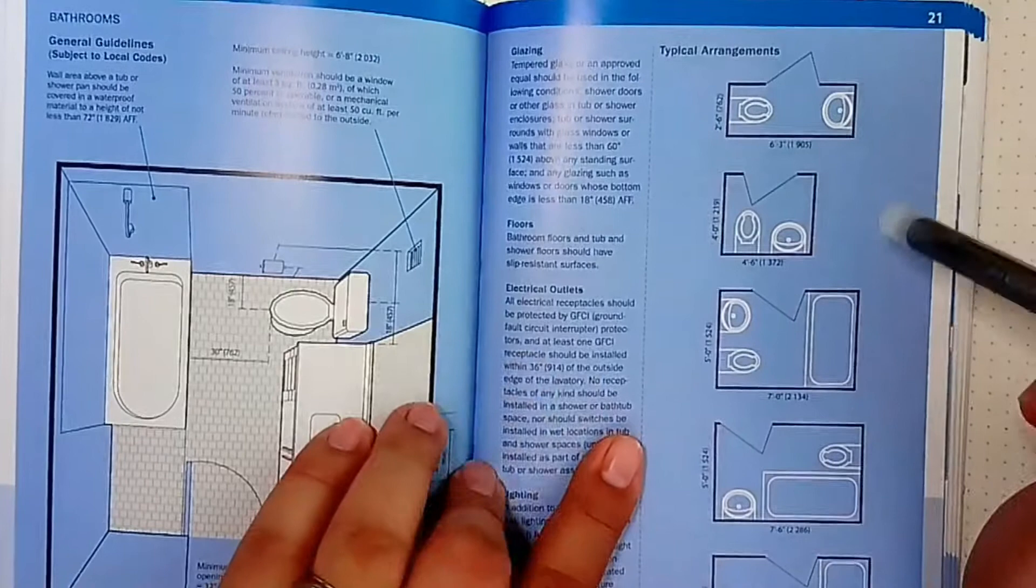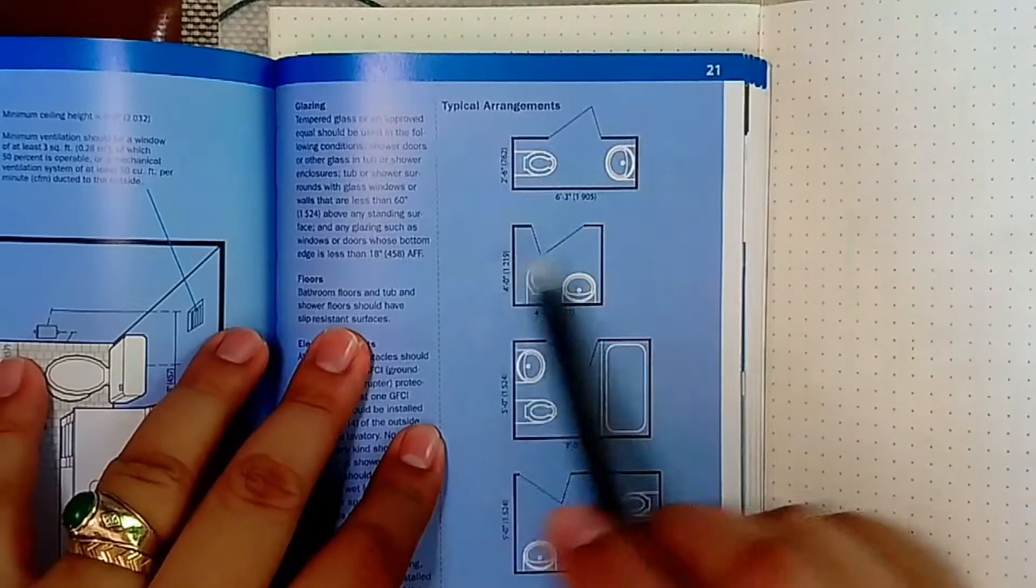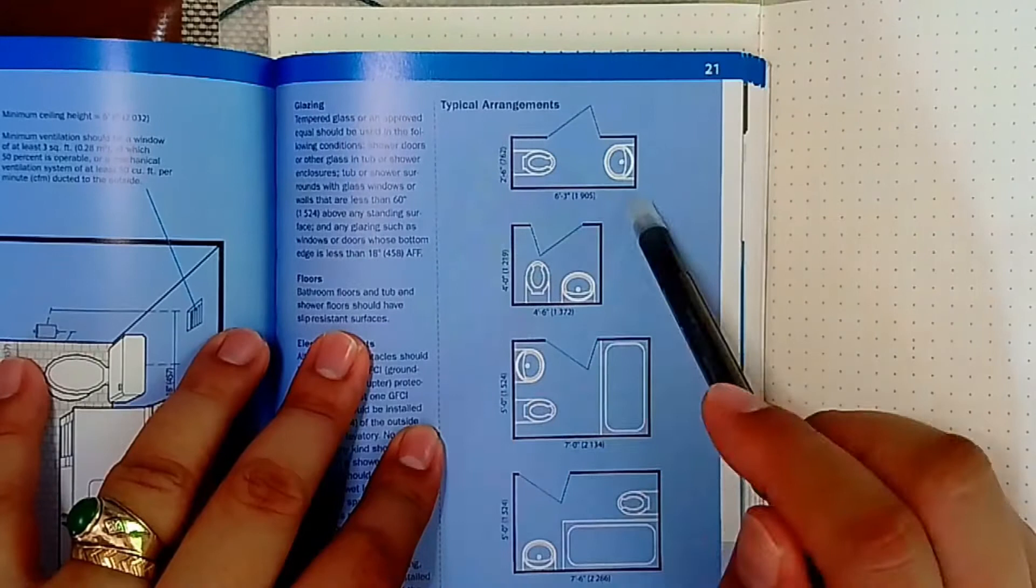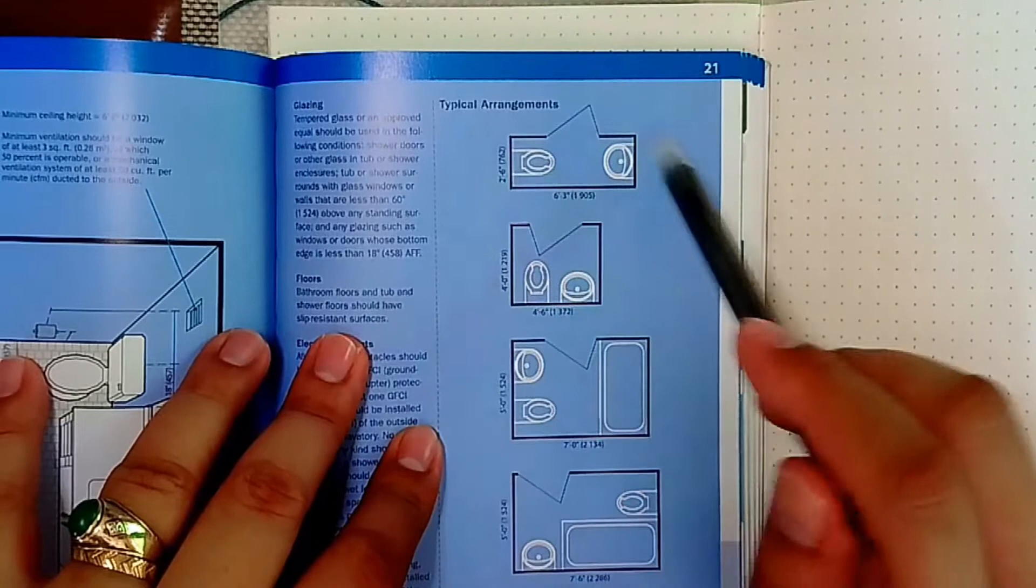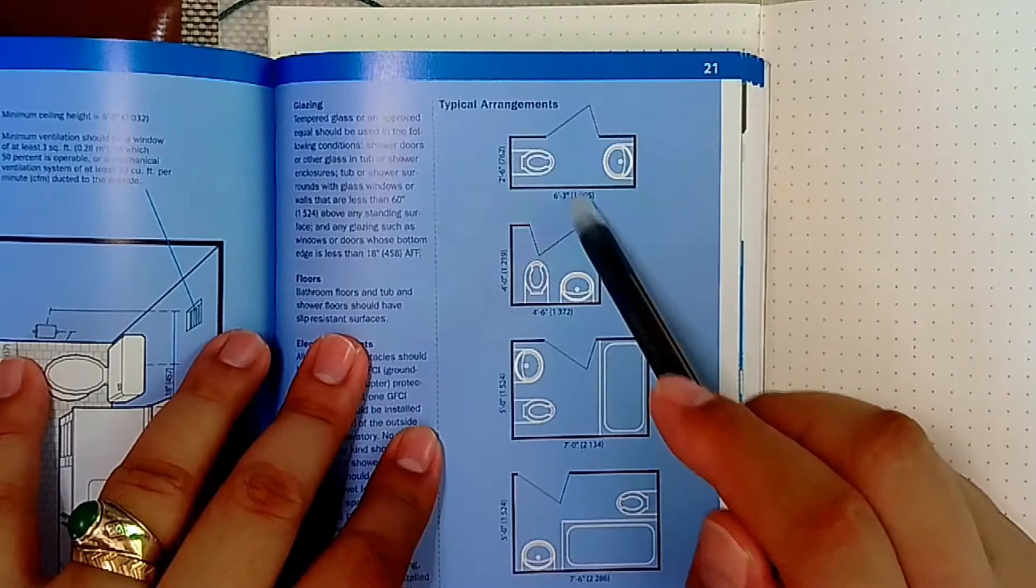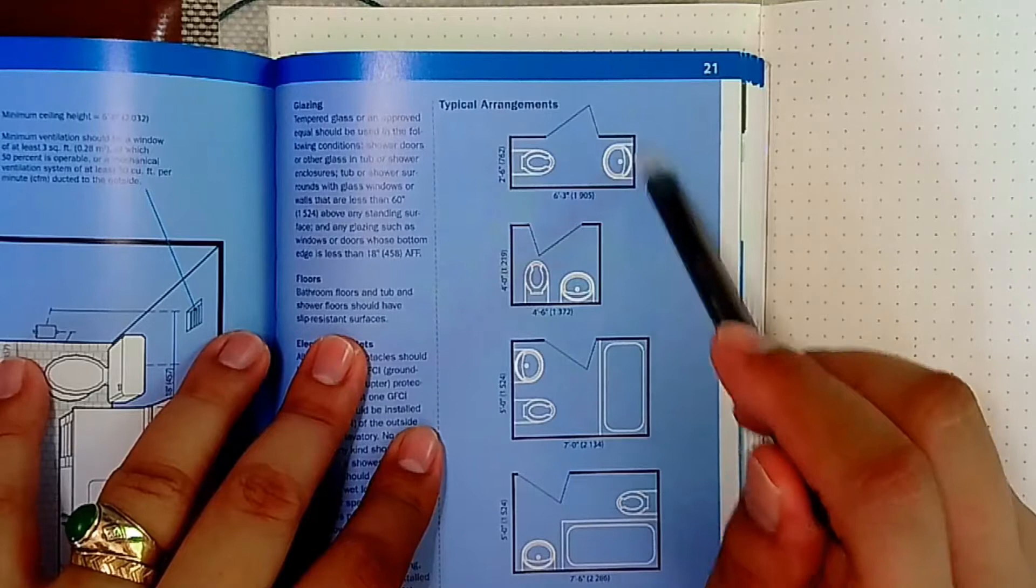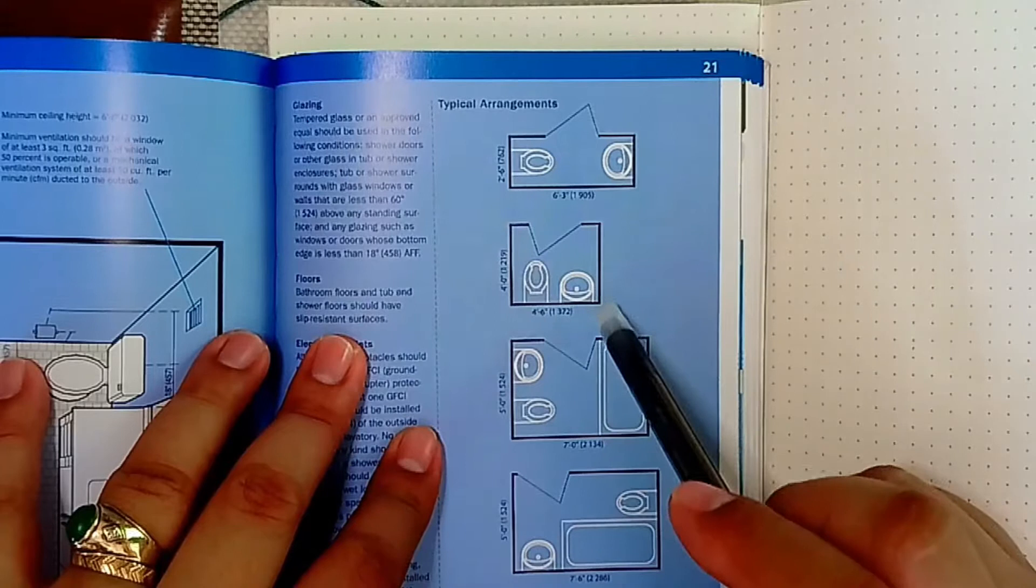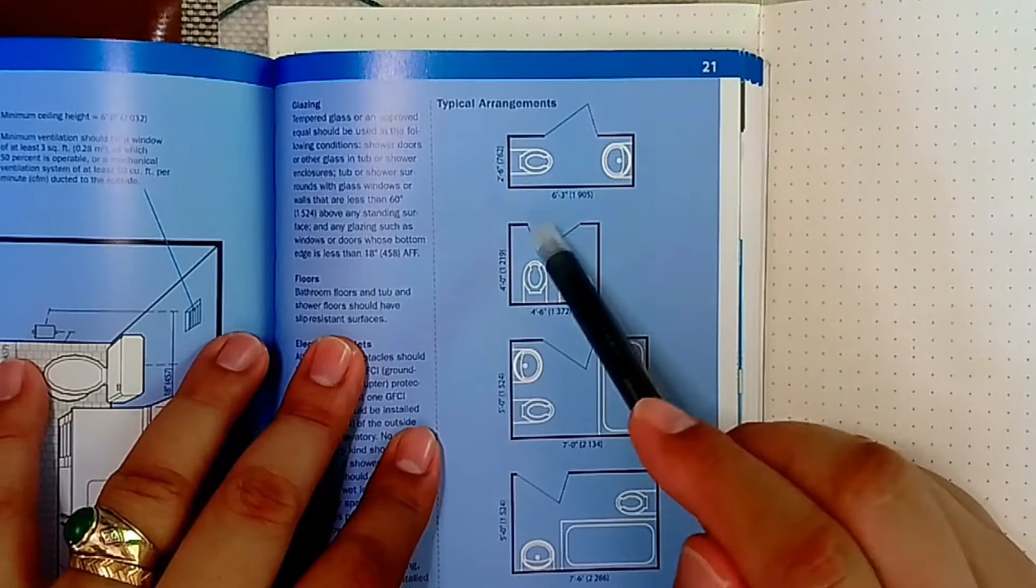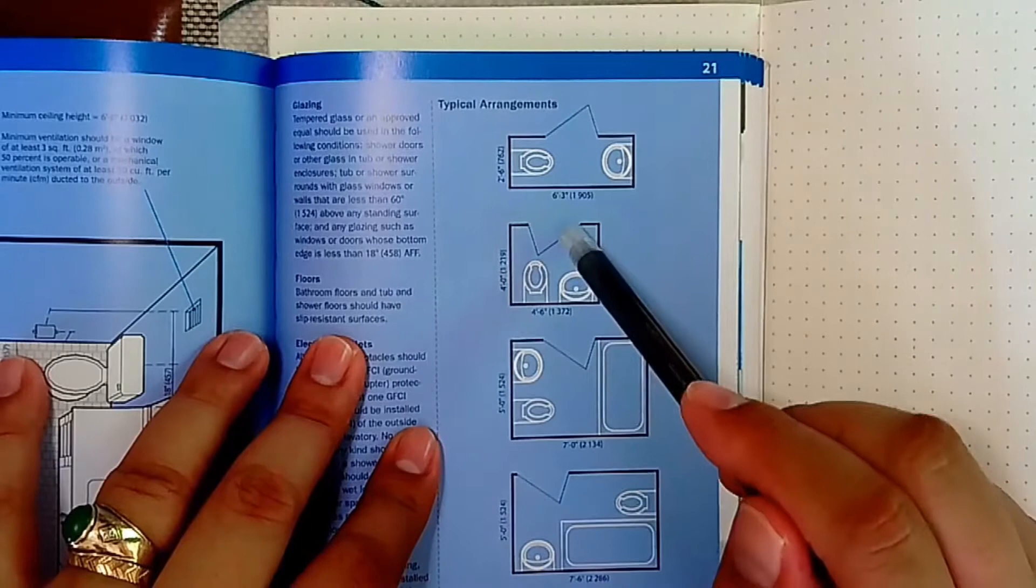These are the typical arrangements. If the size of your bathroom is 0.76 by 1.9 meters, you could have the water closet facing the wash basin. If it's around 1.2 by 1.372 meters and squarish in form, you could have it this way, but I'm discouraging you from using this type of door in your designs.